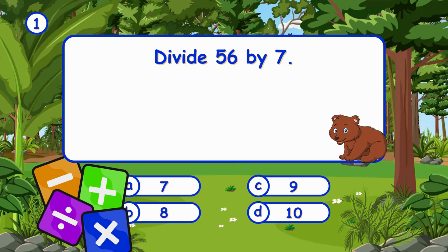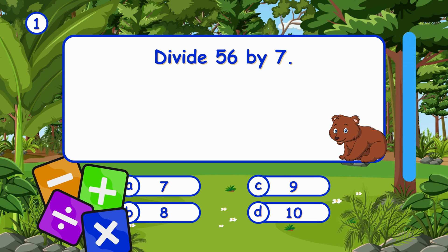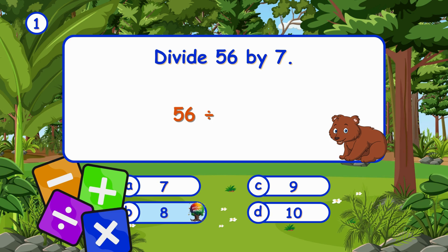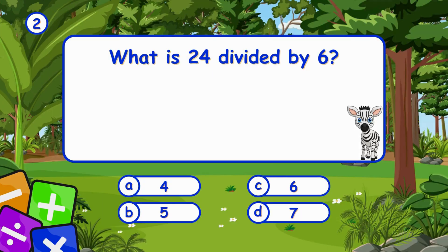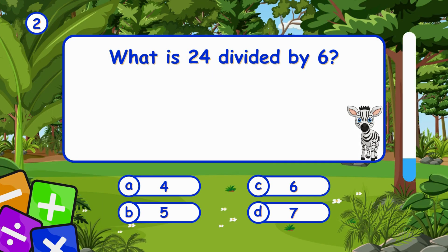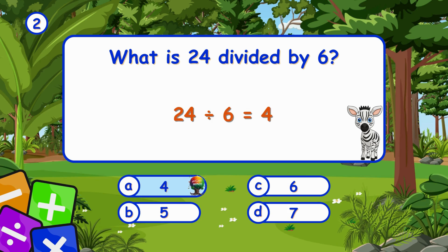Divide 56 by 7. It's B, 8. 56 divided by 7 equals 8. What is 24 divided by 6? 24 divided by 6 equals 4.